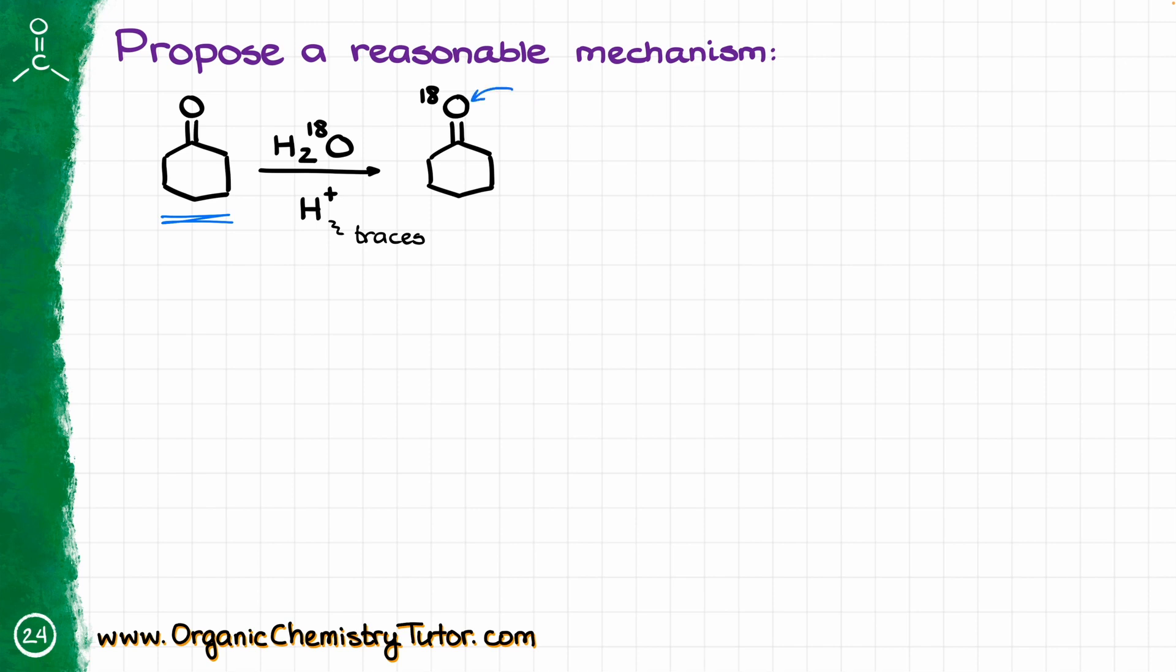So how exactly did that happen? Probably the fact that we have trace amounts of acid there has something to do with that. So let's start our mechanism by thinking what is going to happen with our carbonyl if we were to protonate that.